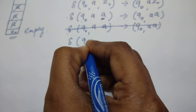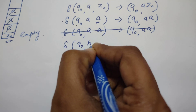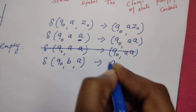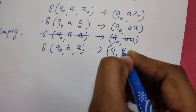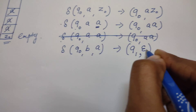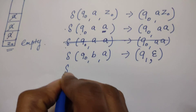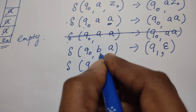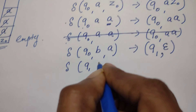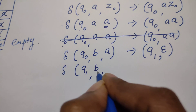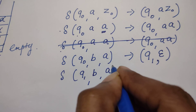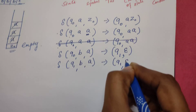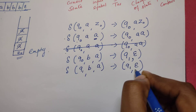After some point, the state of the PDA is q0 and it reads 'b'. When it reads 'b' and the top of the stack is 'a', the state changes to q1 and whatever is at the top of the stack is replaced by epsilon — meaning the top of the stack is popped. Being in q1, it continues to read the rest of the b's. Whenever it reads 'b' in q1, the top of the stack again contains 'a', and that symbol is popped.